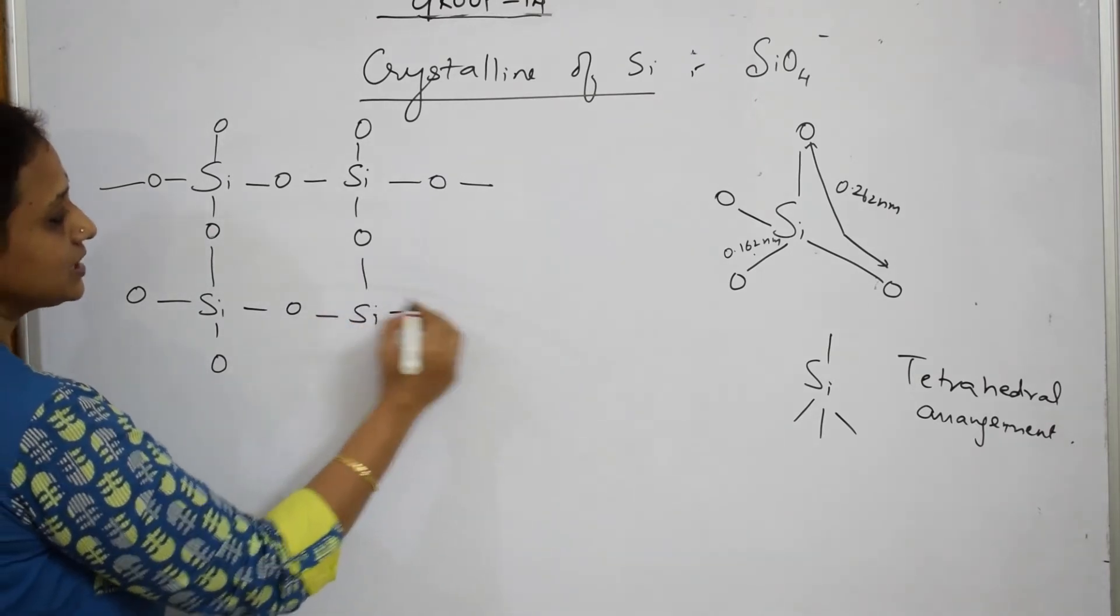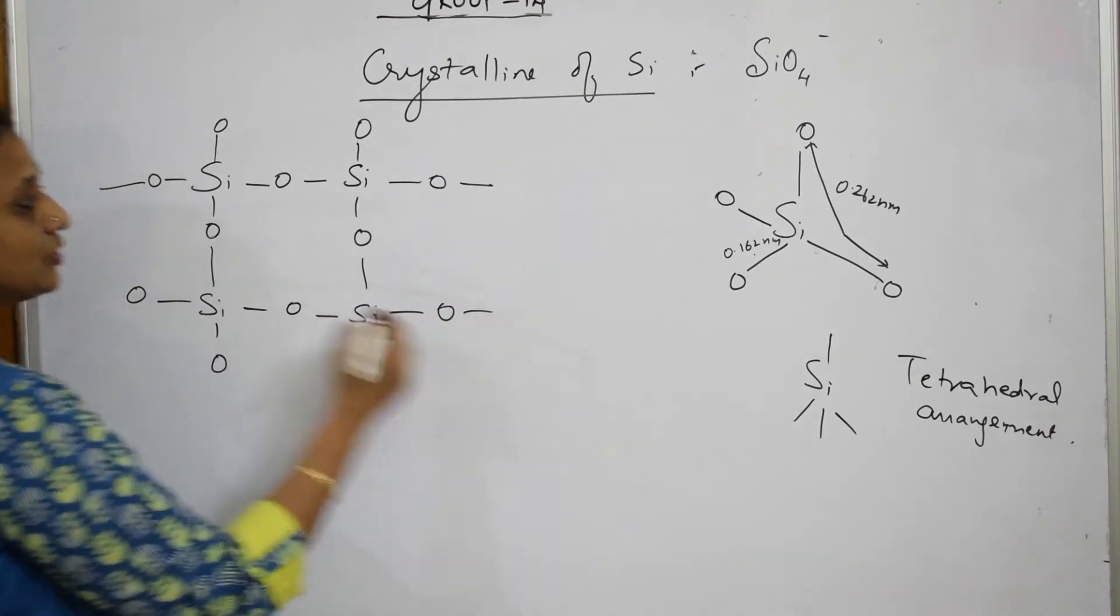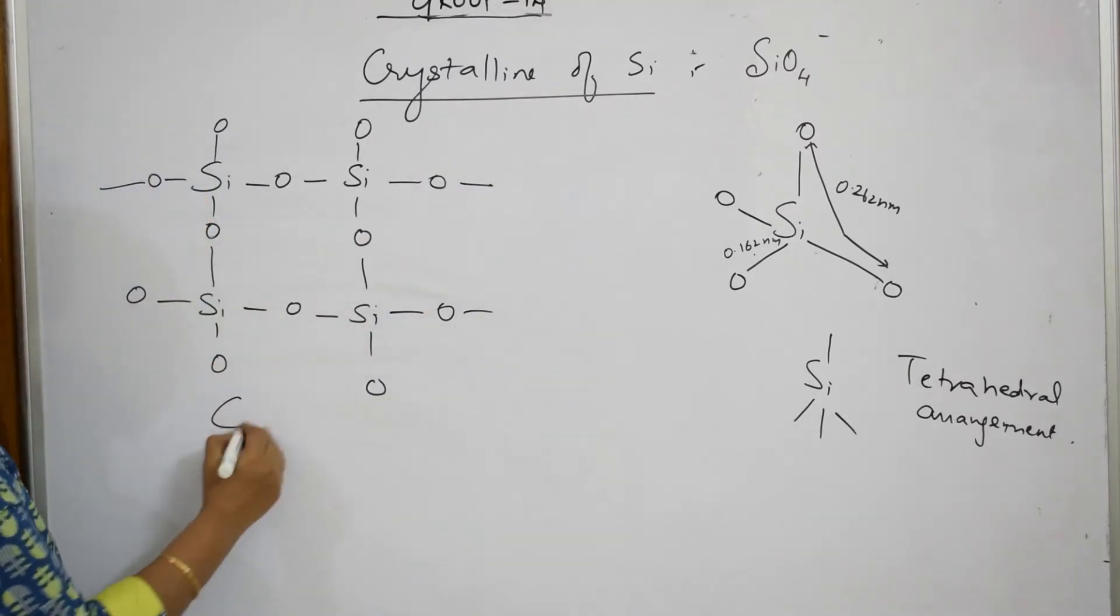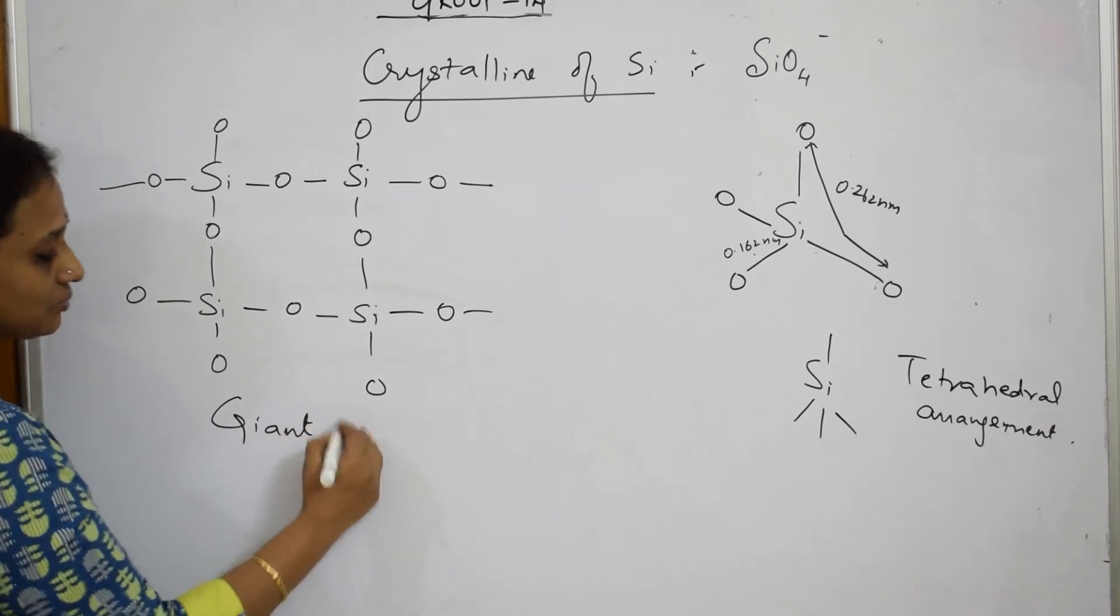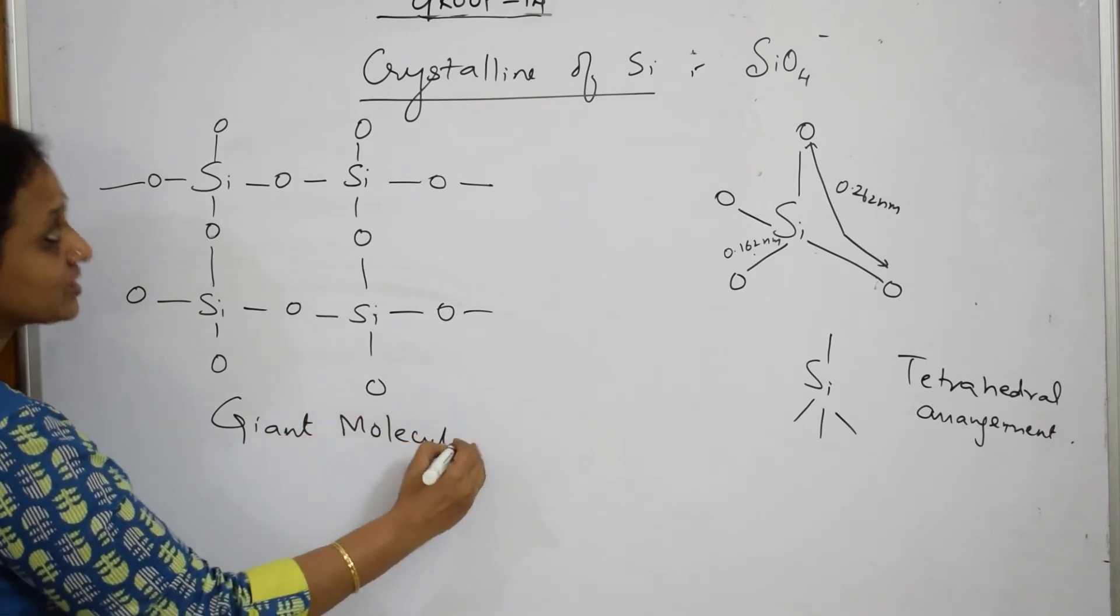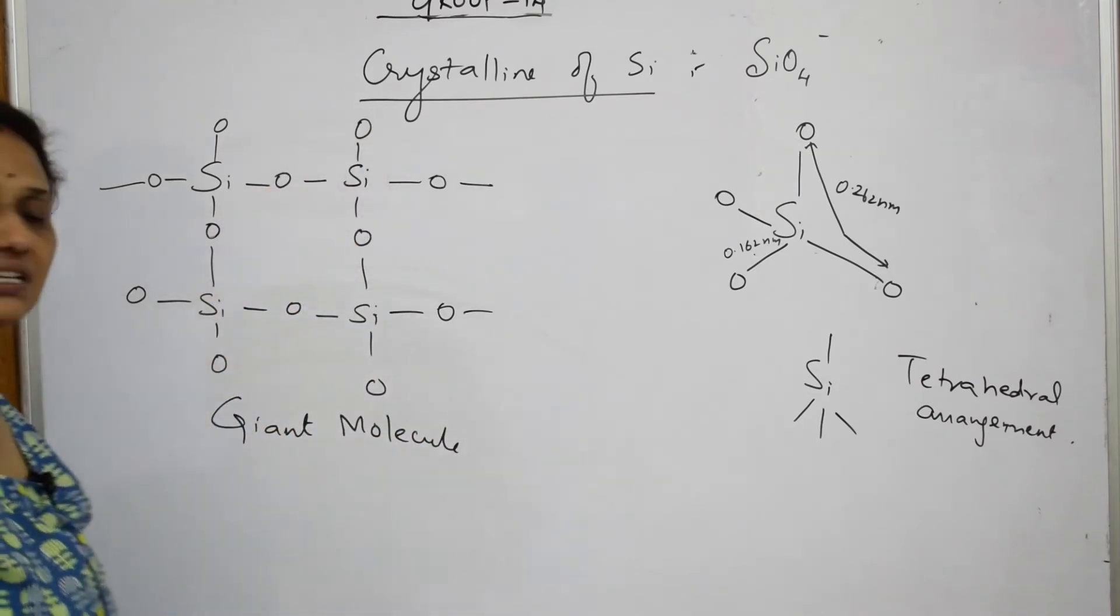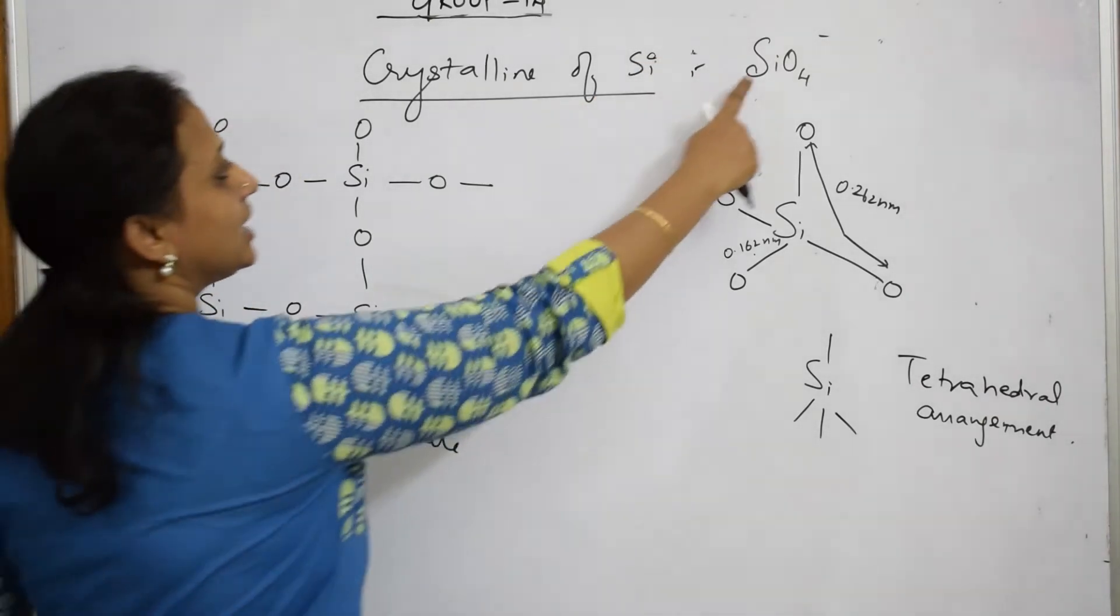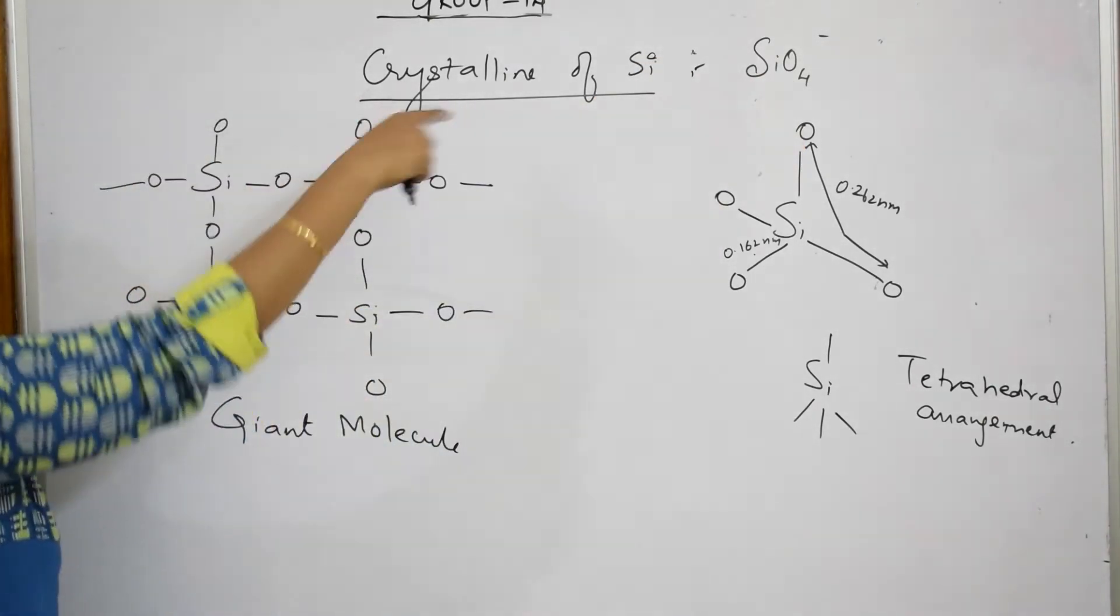This silica should have four, one, this one, two, three, and four. Now again linked, this is going to link with this. And now together it's going to form a giant molecule. It's going to continue like this and form a giant molecule of silicate. This is called crystal structure of silica. You can see SiO4, SiO4 units.